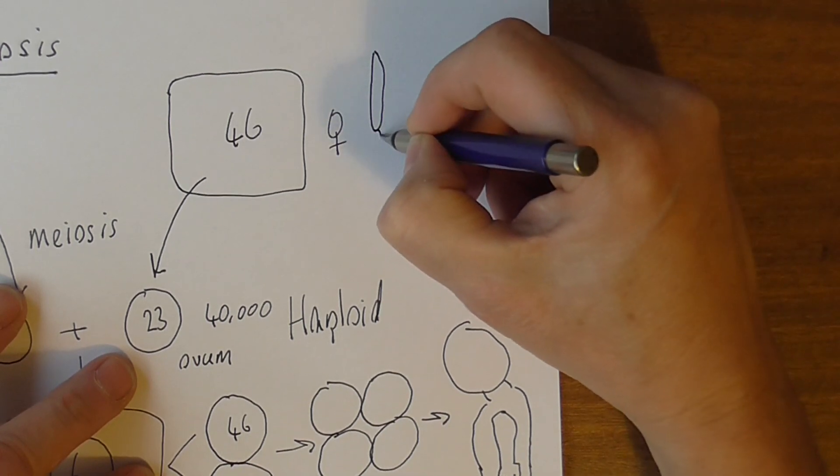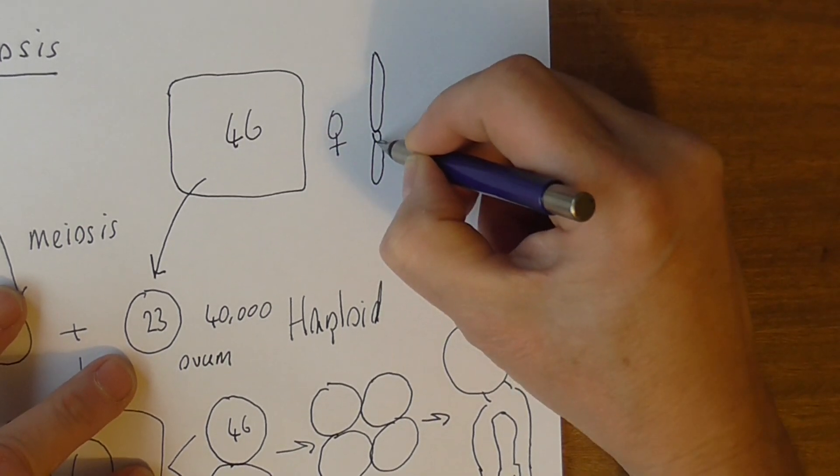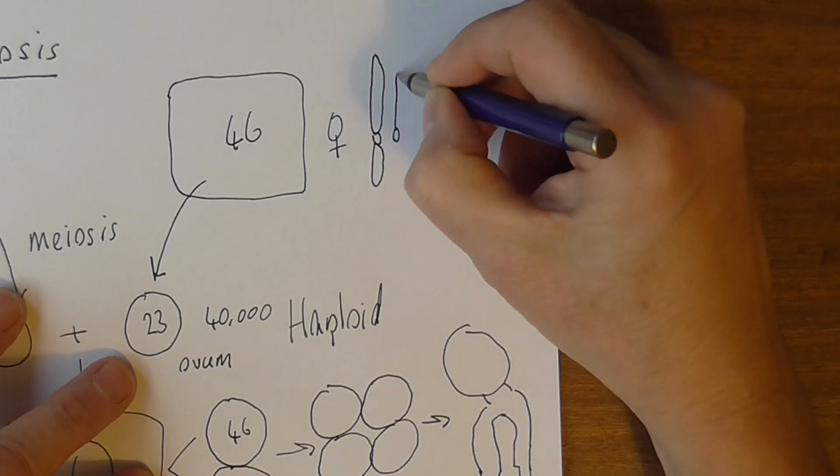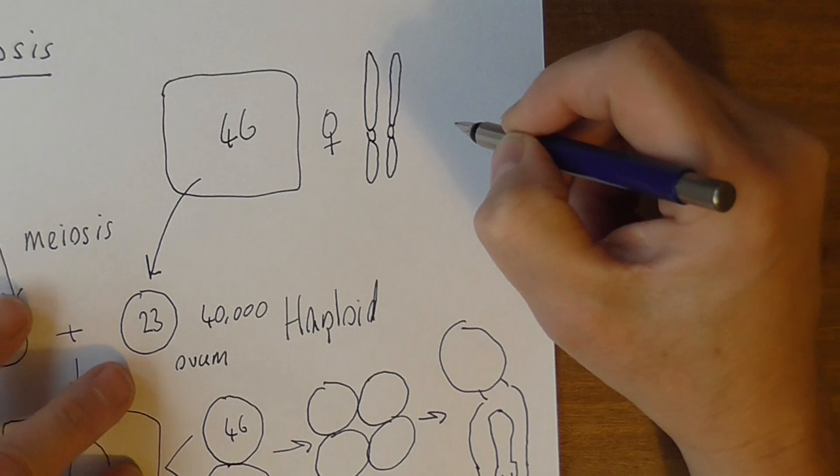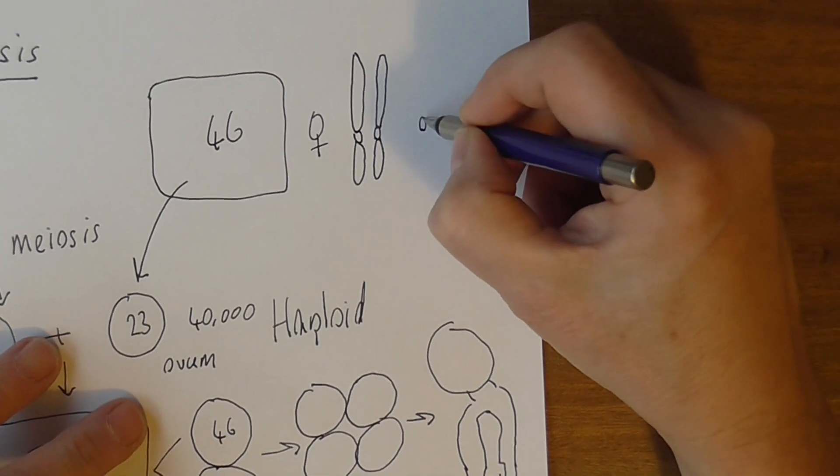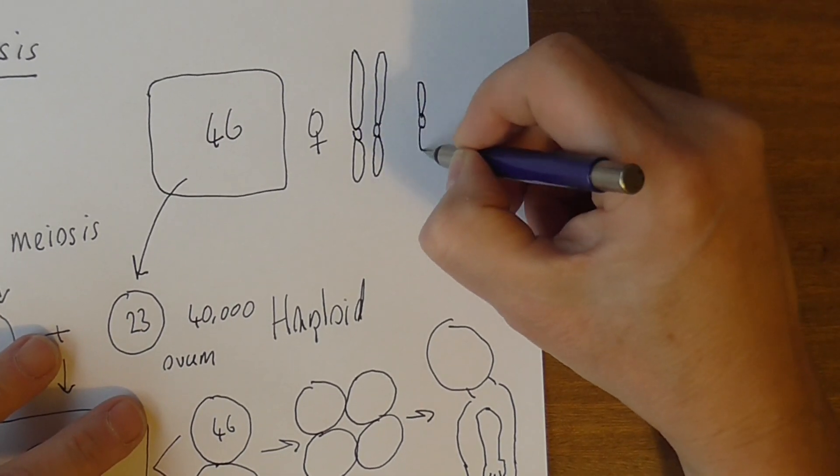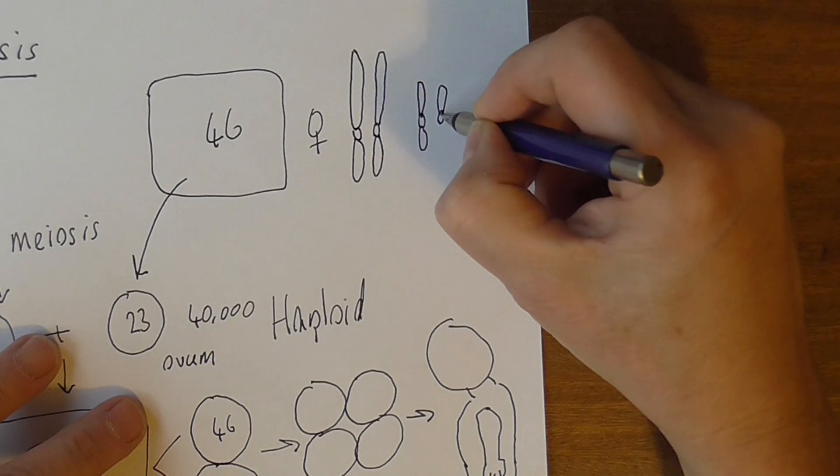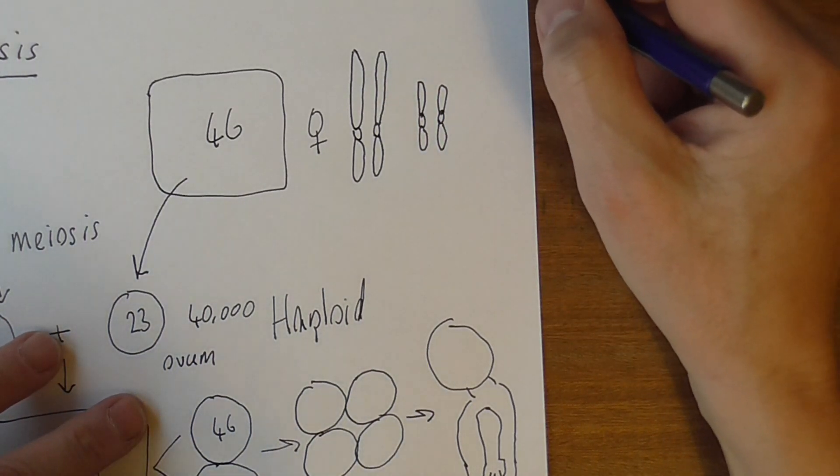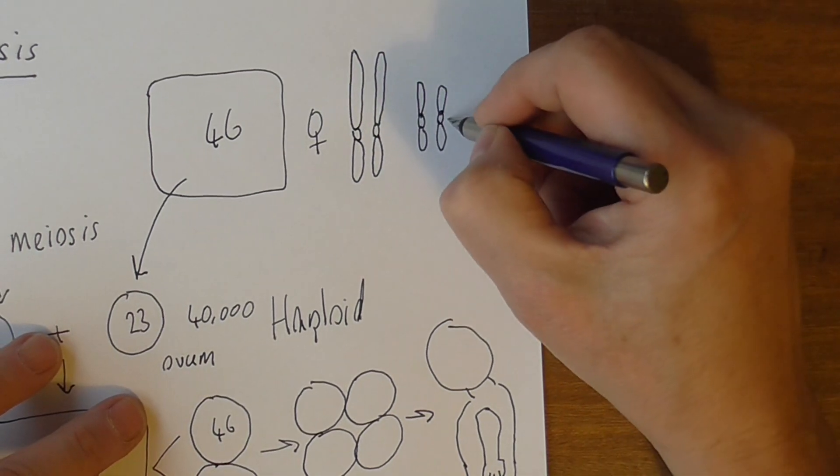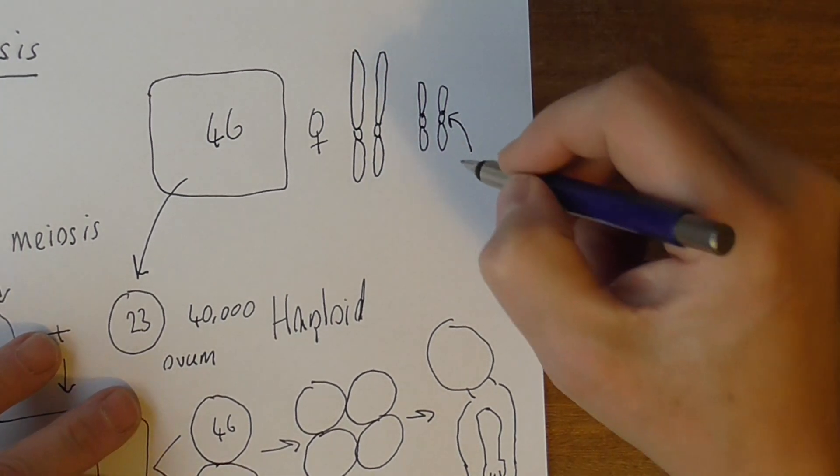Here's, imagine, one homologous pair of chromosomes like this. Of course there's 23 of these pairs, slightly different sizes and everything. Here's a smaller pair here.